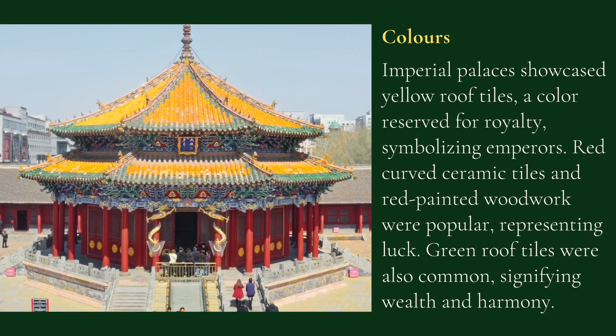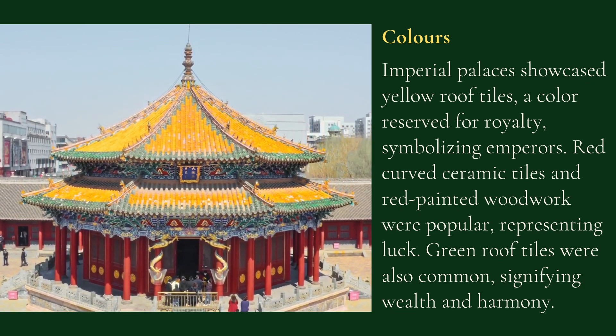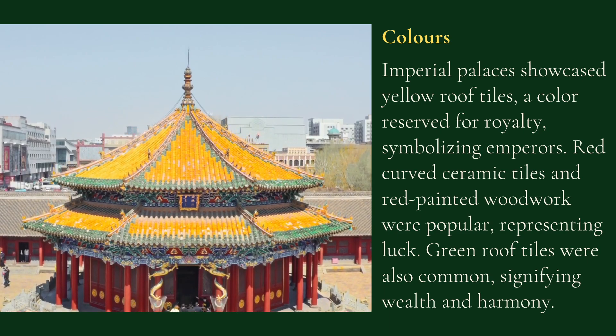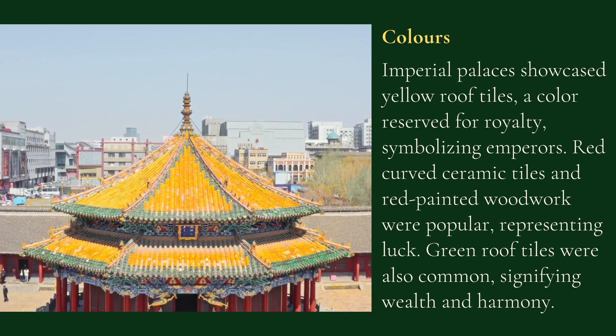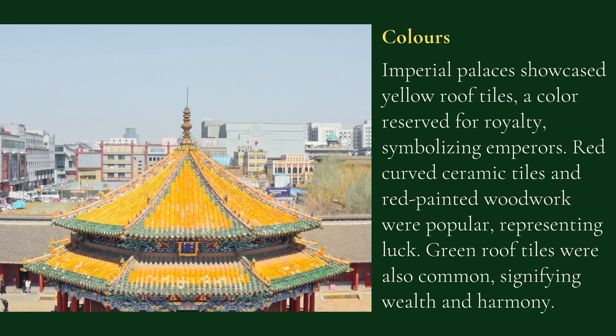If you look at the colors, you can see in this video how colorful Chinese buildings are. The top is yellow, red, and several other colors are also used. It is a palace. The yellow roof colors represent imperialism. Whatever the palaces have been, they were made colorful, and these colors were also used to symbolize royalty. Red curved ceramic tiles and red painted woodwork were popular, representing luck.